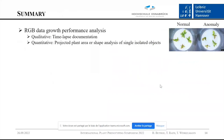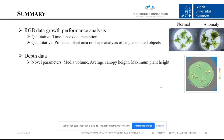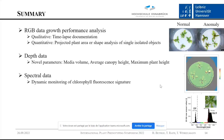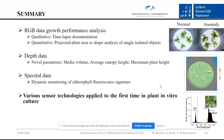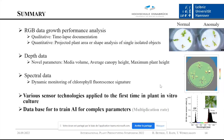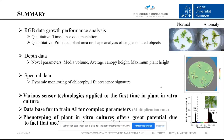To summarize: RGB data can be used for qualitative analysis to study growth and reduction of growth anomalies, or quantitatively by measuring projected plant area or performing shape analysis. We calculated new depth data parameters like media volume, average canopy height, and maximum plant height. Spectral data can potentially be used as a stress indicator, which we want to investigate further. Various sensor technologies were applied for the first time in this cultivation. We now have a database to train AI techniques for complex parameters like multiplication rate. Phenotyping of plant in vitro culture offers great potential.